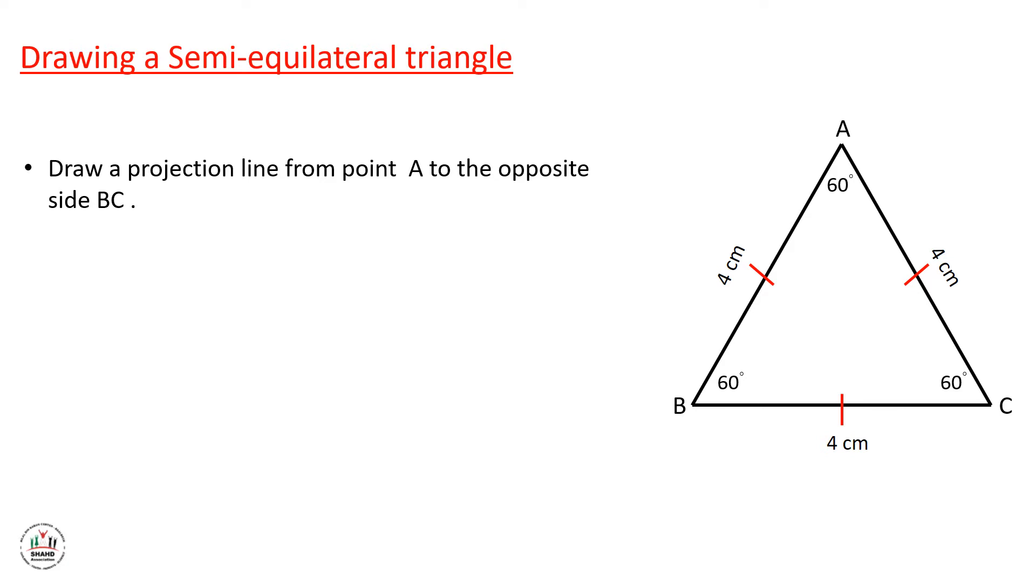Let's see how we can draw a projection line from point A to the opposite side BC. Projection is like this, so it's 90 degrees. Second, the drawn perpendicular segment will split BC into two equal sides.